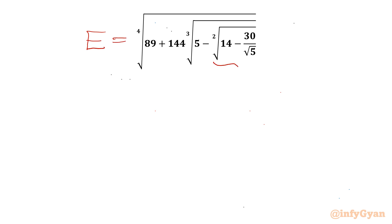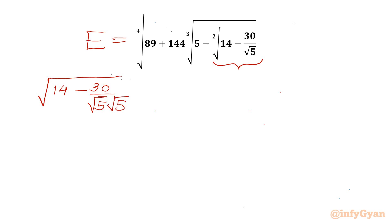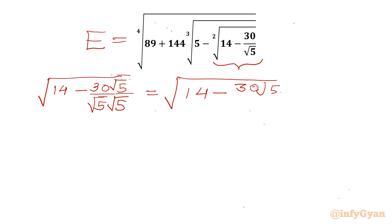Now I will simplify the innermost square root first, which I will write as square root of 14 minus 30 over root 5. Let us rationalize the denominator by multiplying numerator and denominator by root 5. So I can write square root of 14 minus 30 root 5 over 5, or equivalently square root of 14 minus 6 root 5.